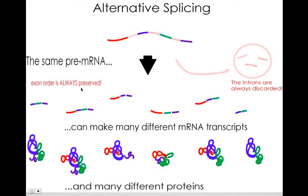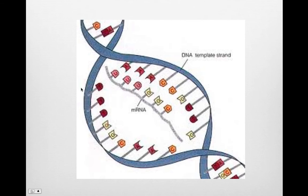Once the messenger RNA is transcribed, alternative RNA splicing can be used to shift the areas considered introns and exons, creating different combinations of code from one gene. In addition, how long a messenger RNA lasts influences the amount of protein produced. The 5' cap is removed, allowing the messenger RNA to be digested. Translation can be prevented by regulatory proteins that bind to the 5' end, preventing ribosome attachment. Sometimes messenger RNA does not have a long enough poly-A tail to begin translation, so an enzyme adds more adenines to the tail, starting translation.